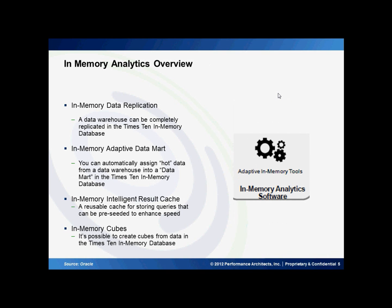In-memory data replication: a data warehouse can be completely replicated in TimesTen in-memory databases, meaning the databases are all going to be completely in RAM and it's just a lot faster to pull the data out. You can also create an in-memory adaptive data mart, automatically assigning hot data from a data warehouse into a data mart in RAM. Hot data is data that is used multiple times by users everywhere — so it kind of stores it in a cache.